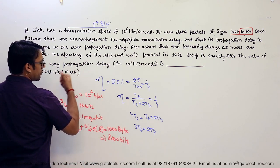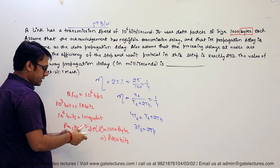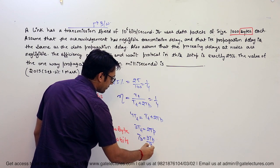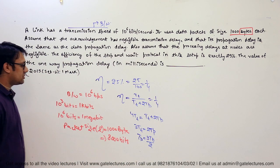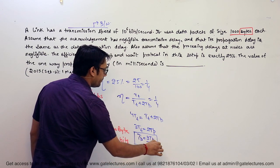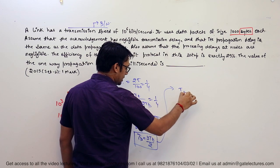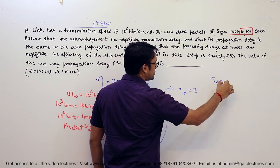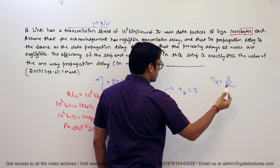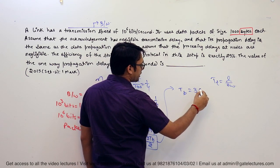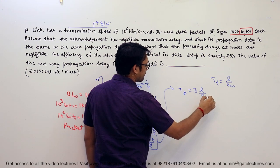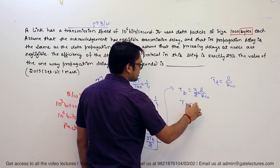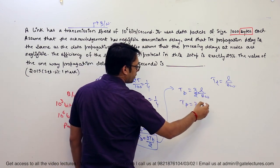They are asking for propagation delay, which is tp. From 3·tt = 2·tp, propagation delay tp equals 3 times transmission time divided by 2. Transmission time can be written as length of the data packet divided by bandwidth. So tp equals (3/2) × (length / bandwidth).